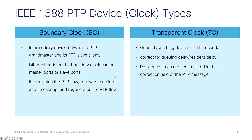Transparent clocks are also found in switches and routers across the network, but instead of recording the time and forwarding it, they simply record the amount of time the message spent traversing that switch or router. When the message finally arrives at the PTP client, it contains information about the accumulated delay through the network, allowing the client clock to precisely align its local time to the master clock.